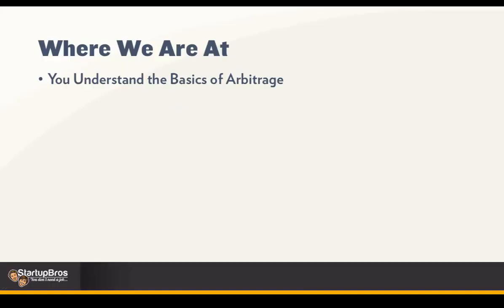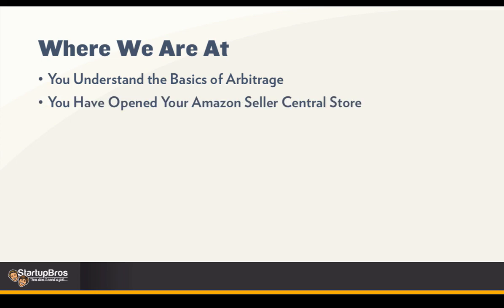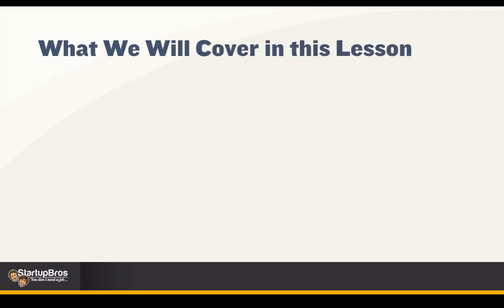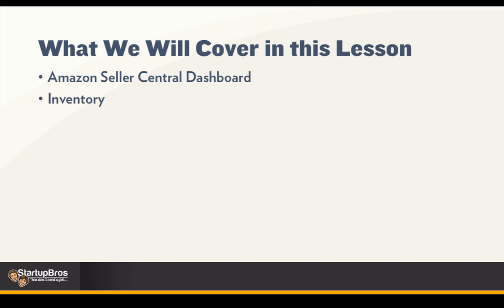So where we're at now, you have a basic understanding of arbitrage, and you've opened your Amazon Seller Central store. So in this lesson, we're going to cover the Amazon Seller Central Dashboard, cover the Inventory tab of how to add products, all of the information about your products, where to edit them. This is all done through your inventory.